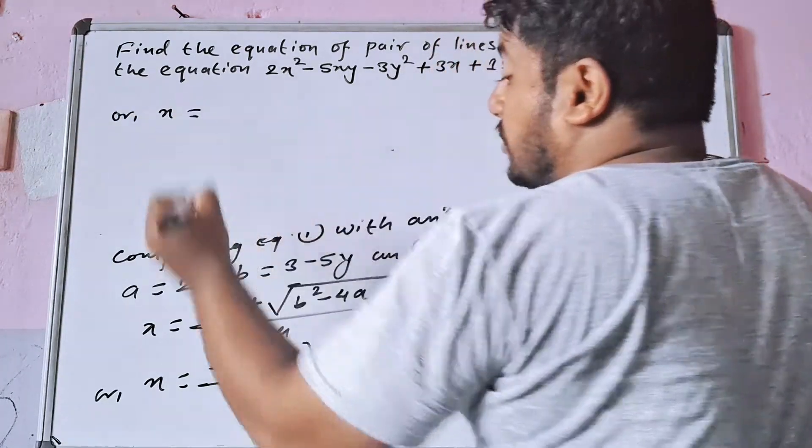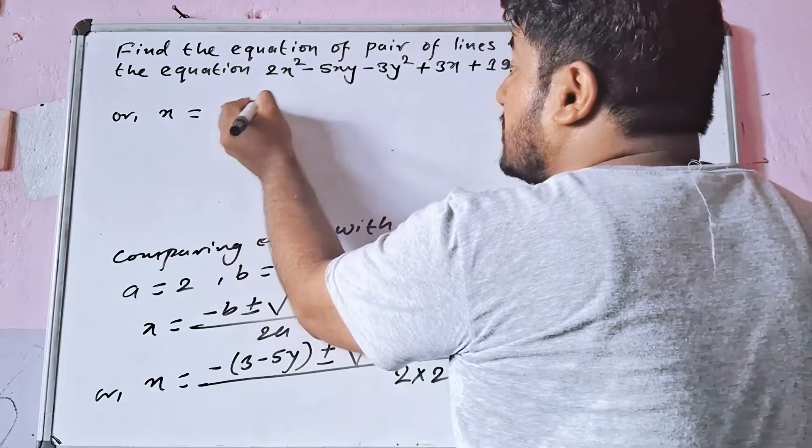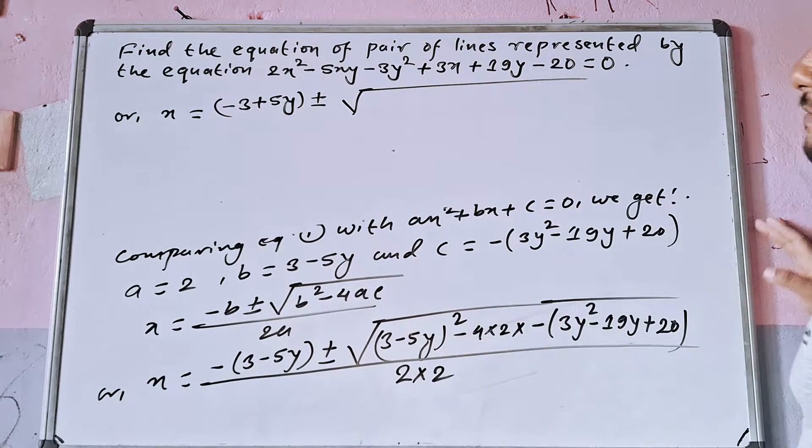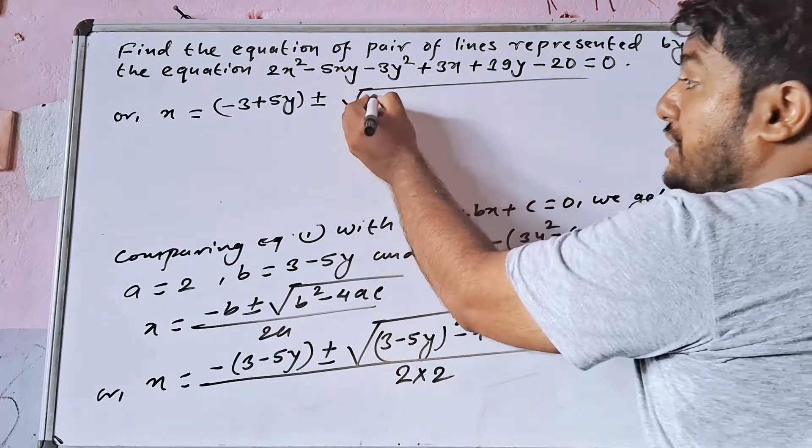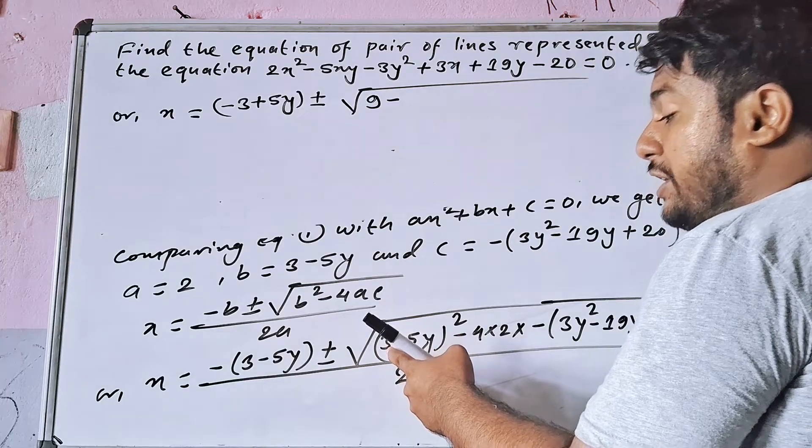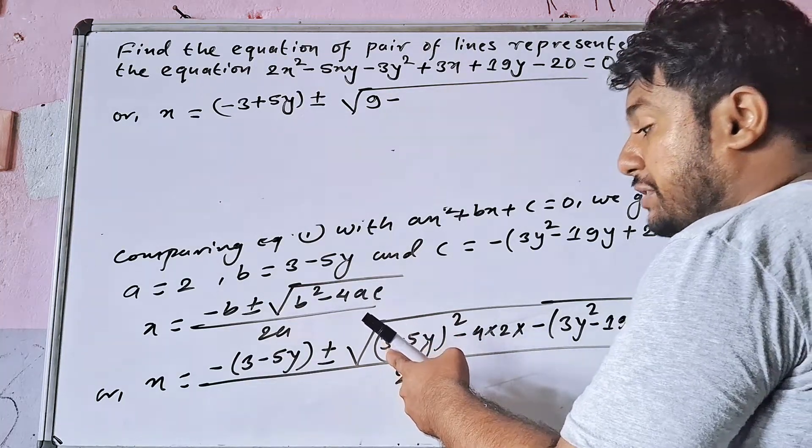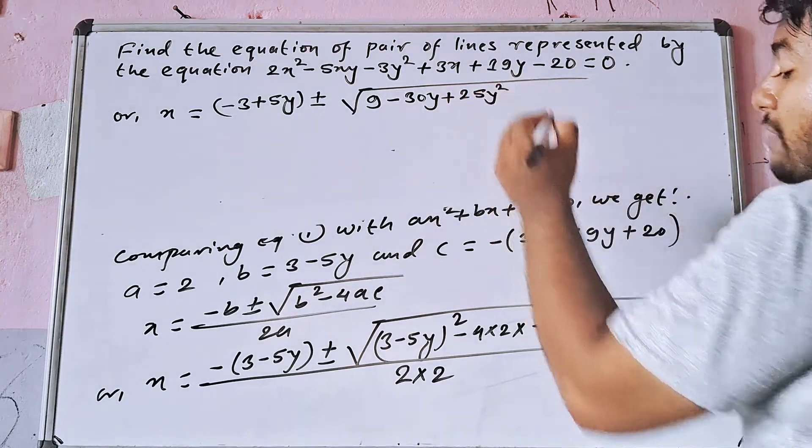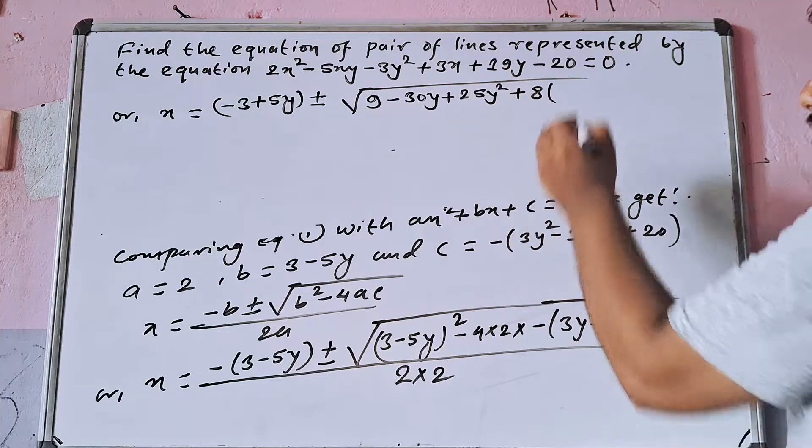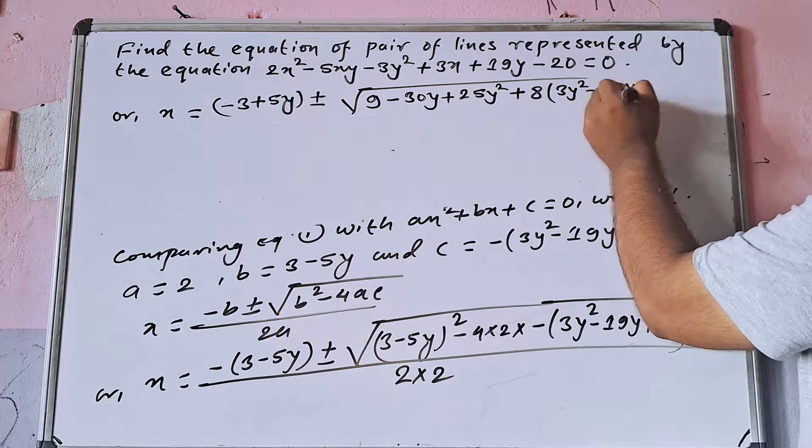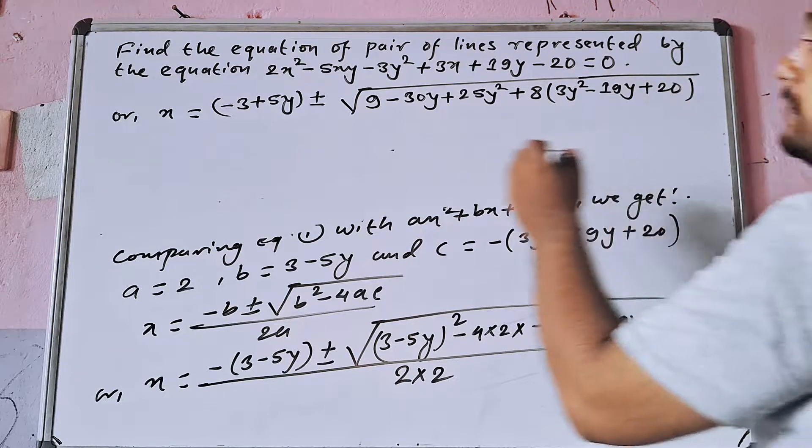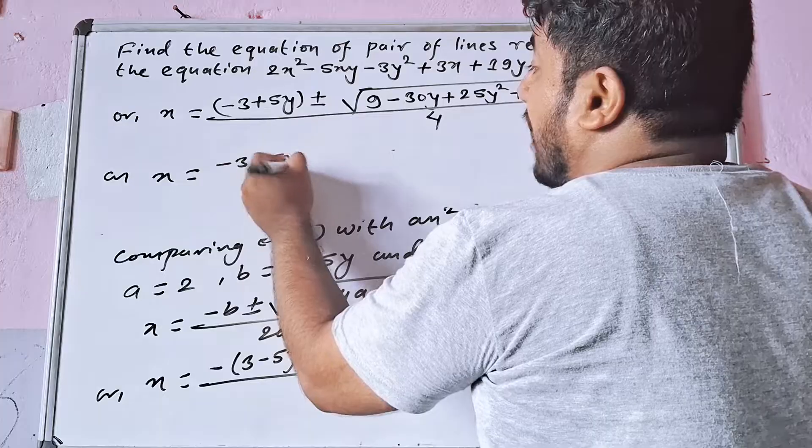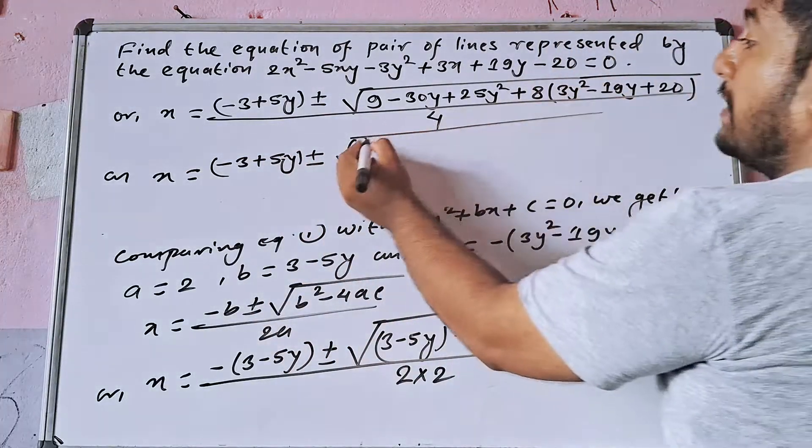x is equal to minus 3 plus 5y plus minus root under 9 minus 30y plus 25y square plus 24y square minus 152y plus 160, whole divided by 4.